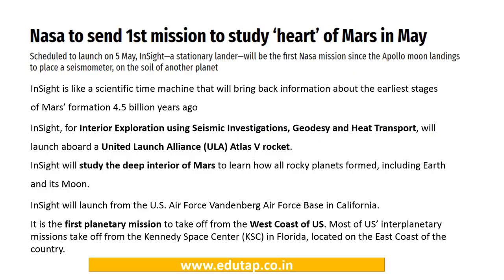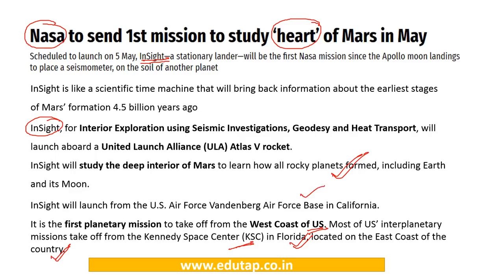NASA has scheduled a mission known as INSIGHT, aiming to study the heart of Mars to learn how all rocky planets are formed. Usually NASA missions launch from Kennedy Space Center in Florida on the east coast, but INSIGHT was launched from Vandenberg Air Force Base in California on the west coast of the US, using the rocket Atlas V. There may be a Phase 1 question on this mission, so remember its name, objective, and that it is a NASA mission.